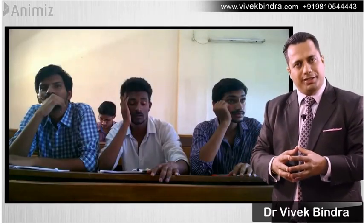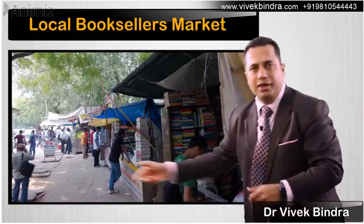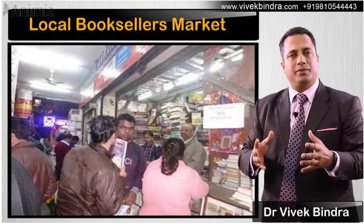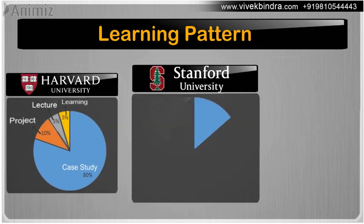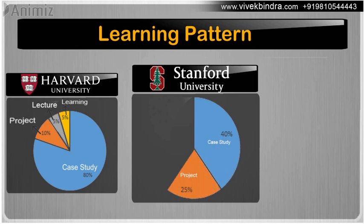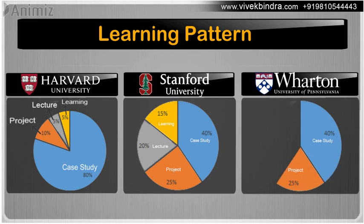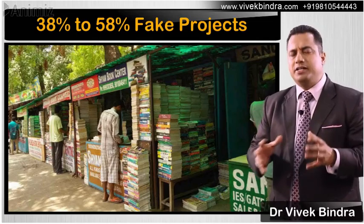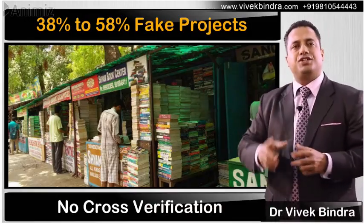Students go to Delhi, search around, find many projects, pay ₹5,000 for a project, come back and submit it. That is the state of things here. Harvard works 80% on case studies, 10% on projects, and gives only 5% as lectures. At Stanford it is 40% case study, 25% project, and 20% lecture. At Wharton also 40% case study, 25% project, 20% lecture. Research found that 38–58% of students bring fake summer internships without doing actual practice, and colleges do not cross-verify.